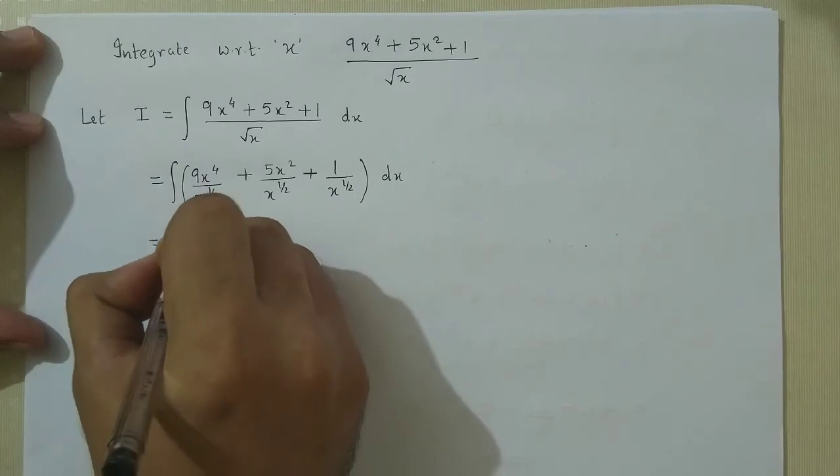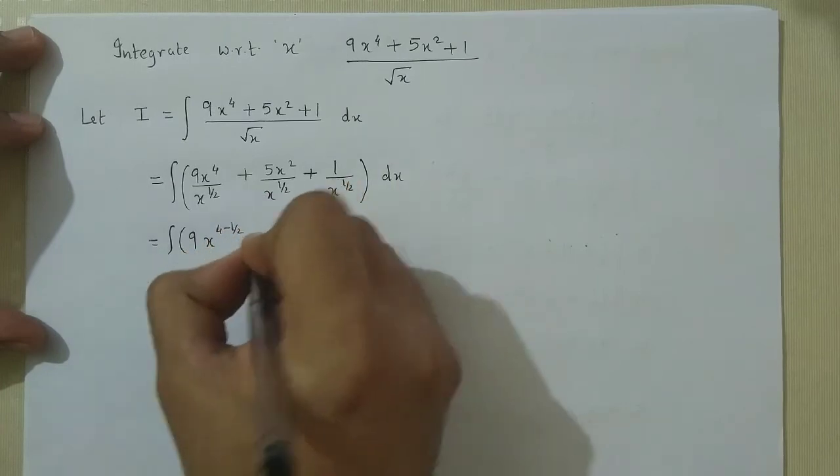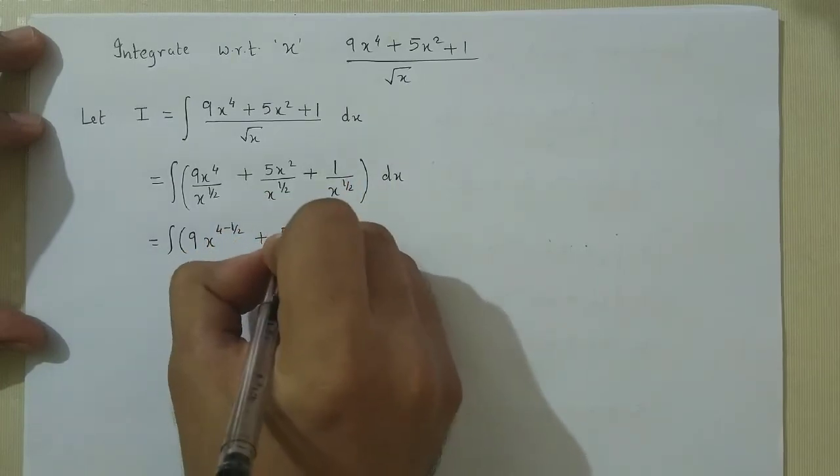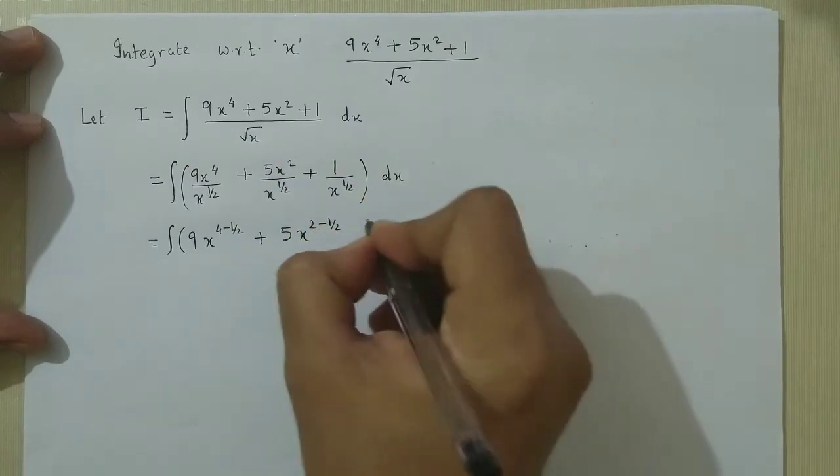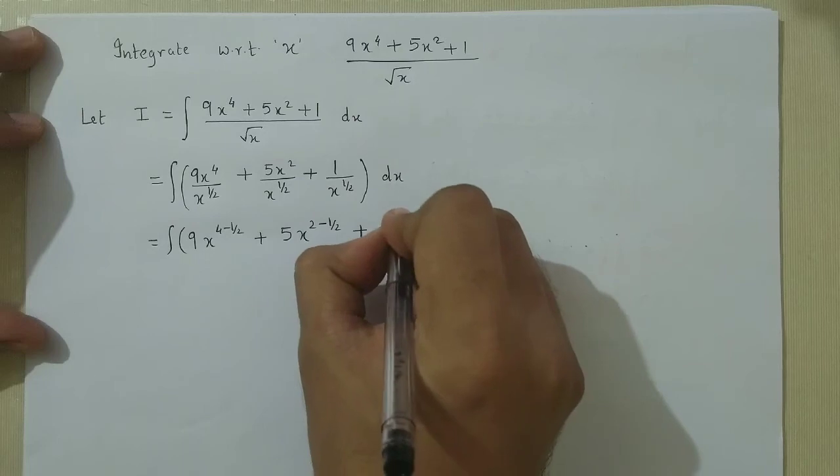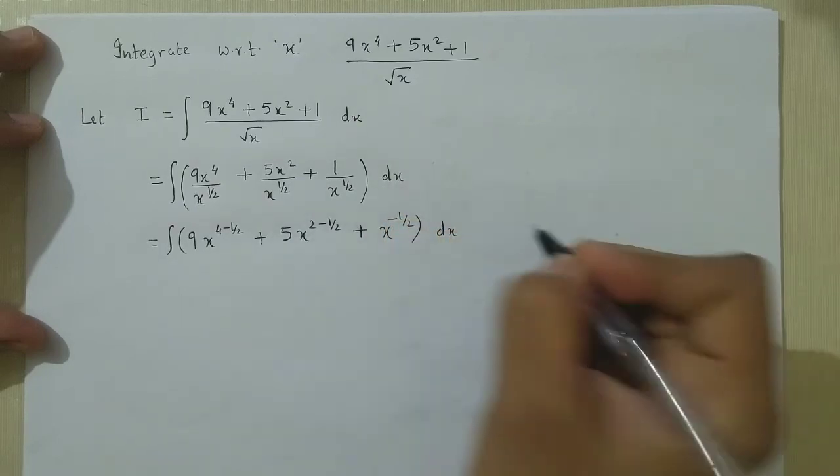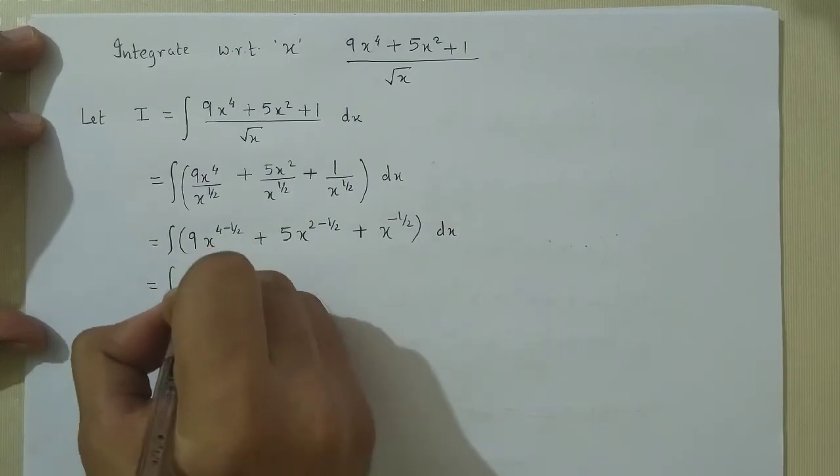This can be written as 9 times x raised to (4 minus 1/2), plus 5 times x raised to (2 minus 1/2), plus x raised to minus 1/2, dx. Now proceeding further we get